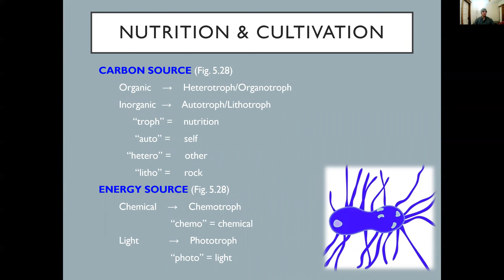So how do we classify these organisms? First, let's look at carbon source. Organisms that use organic matter as a carbon source are called heterotrophs or organotrophs — most commonly heterotrophs. If they use an inorganic carbon source such as CO2, they are classified as autotrophs or lithotrophs. 'Litho' refers to rock or earth, and 'auto' means automatic — as if using freely available atmospheric CO2 automatically.